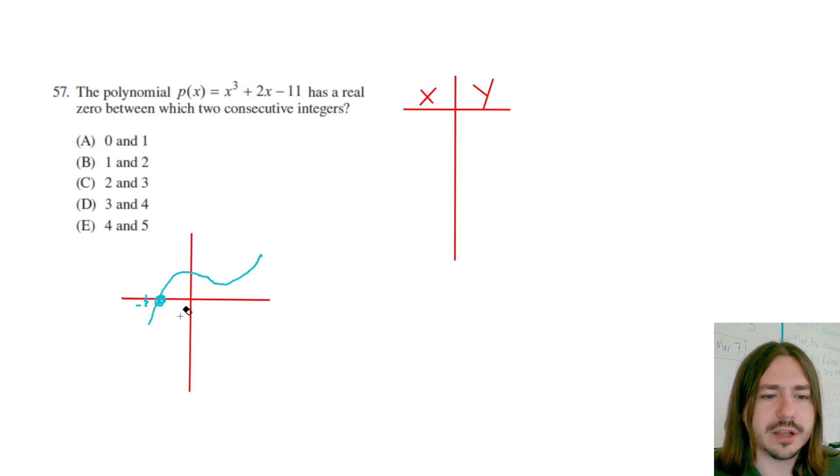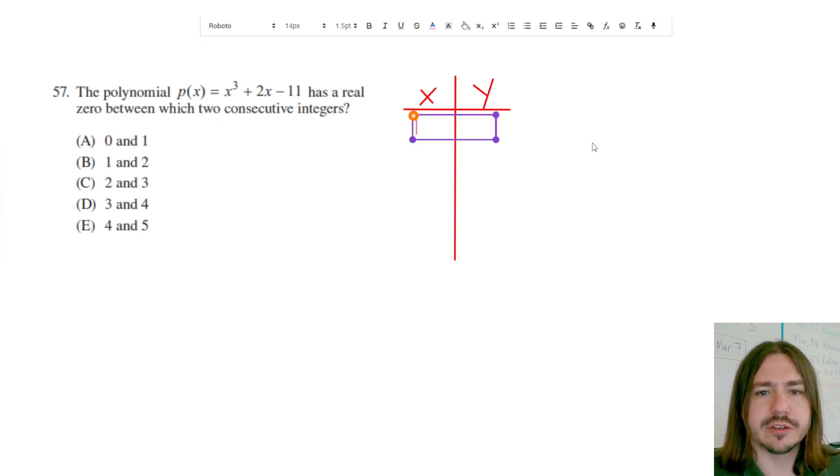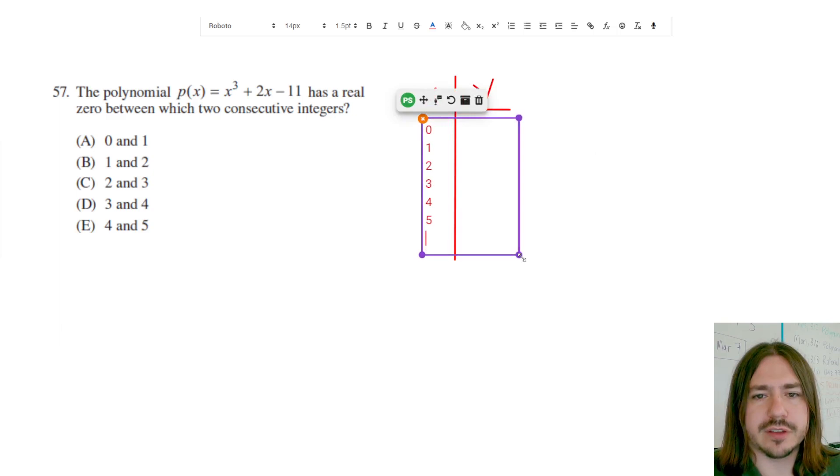So we're just going to plug in some values into this function, and we'll just start. We shouldn't have to try too many here. We'll just go from 0 to 5. So those are going to be the values we plug into the calculator. Let's get to plugging in these numbers to see what we have.